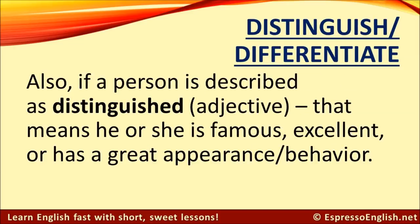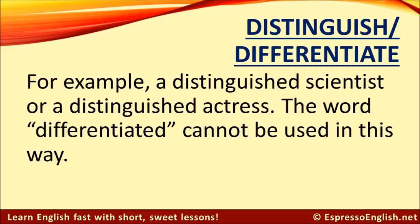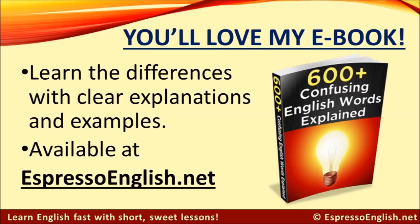Also, if a person is described as distinguished — that's an adjective — it means he or she is famous, excellent, or has a great appearance or great behavior. For example, a distinguished scientist or a distinguished actress. But the word differentiated cannot be used in this way. If you liked this lesson, then you will love my e-book, 600 Plus Confusing English Words Explained, which will help you learn all the differences with clear explanations and examples. It's available at EspressoEnglish.net — just click on e-books and look for 600 Plus Confusing English Words Explained.